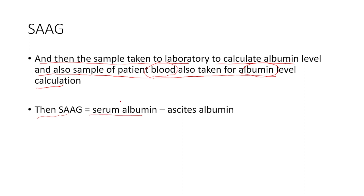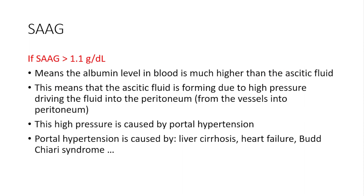You can find the SAAG value through this equation: serum albumin minus ascites albumin. After you find the SAAG value, if it is more than 1.1 g/dL, this means that the albumin level in the blood is much higher than in the ascitic fluid.